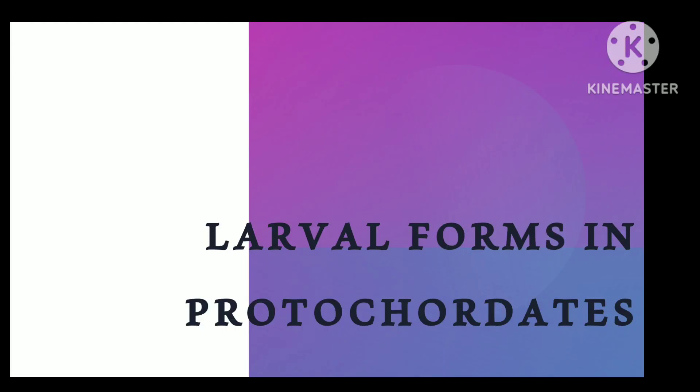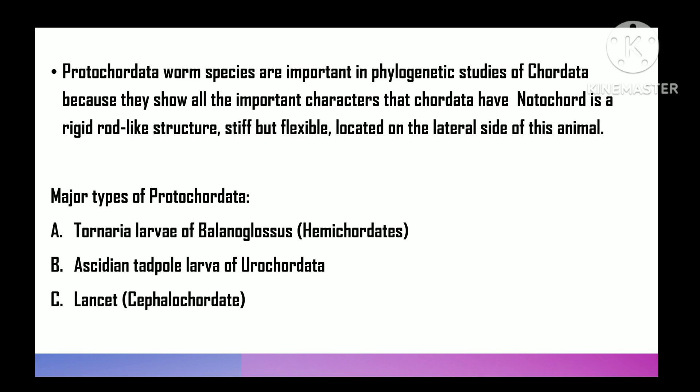Today's topic is larval forms in proto-cordates. The larval forms of proto-cordata are significant in phylogenetic studies of cordata as they exhibit all the essential characters possessed by cordates. The notochord is a solid, unjoined, stiff but flexible rod-like structure situated on the dorsal side of these animals. There are four types of larval forms of proto-cordata.